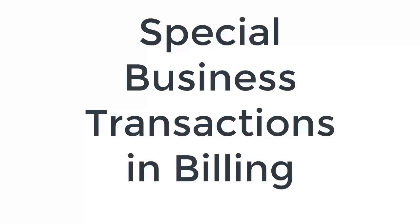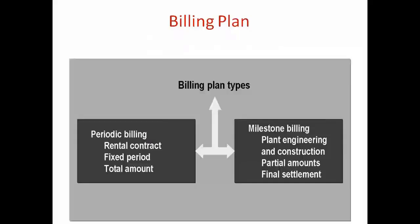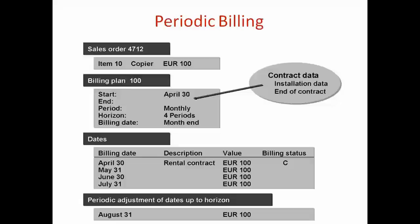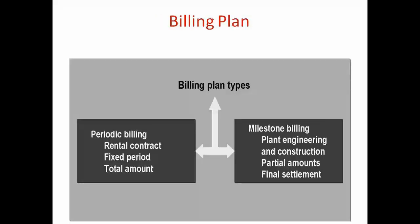Let's move to the next topic: Special Business Transactions. So we have two different types of billing in the system. One is called Periodic Billing and one is called Milestone Billing.